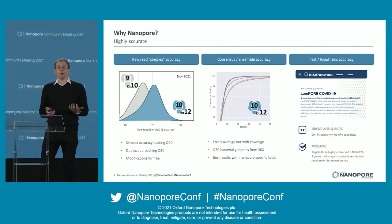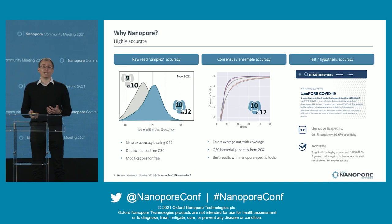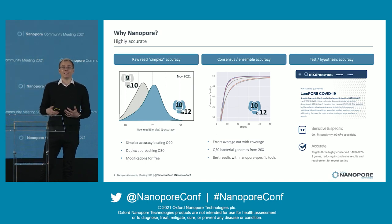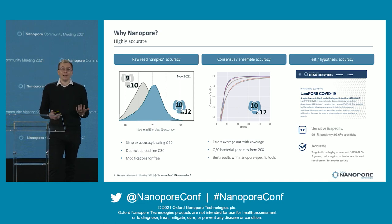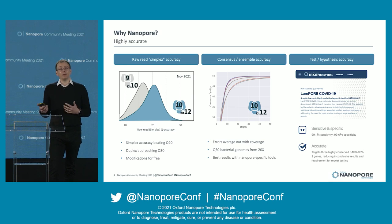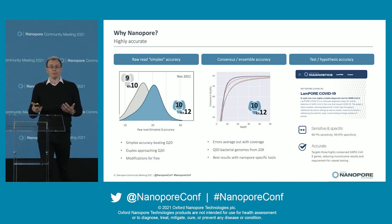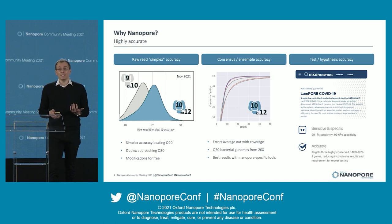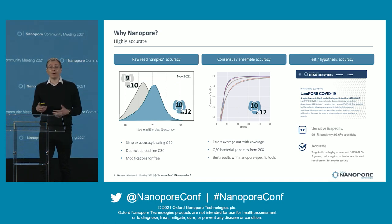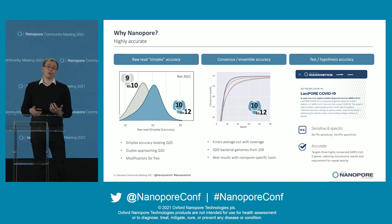So why Nanopore? Let's start with accuracy. Accuracy is a topic that is discussed a lot on Nanopore, and I think one reason for this is we went out the door very early — about eight years ago in an early access program. We knew the accuracy would improve and we really wanted to improve it in the field, build a community, iterate with you, and it really has improved. We've come on leaps and bounds over that time period and probably exceeded the expectations of a lot of people.